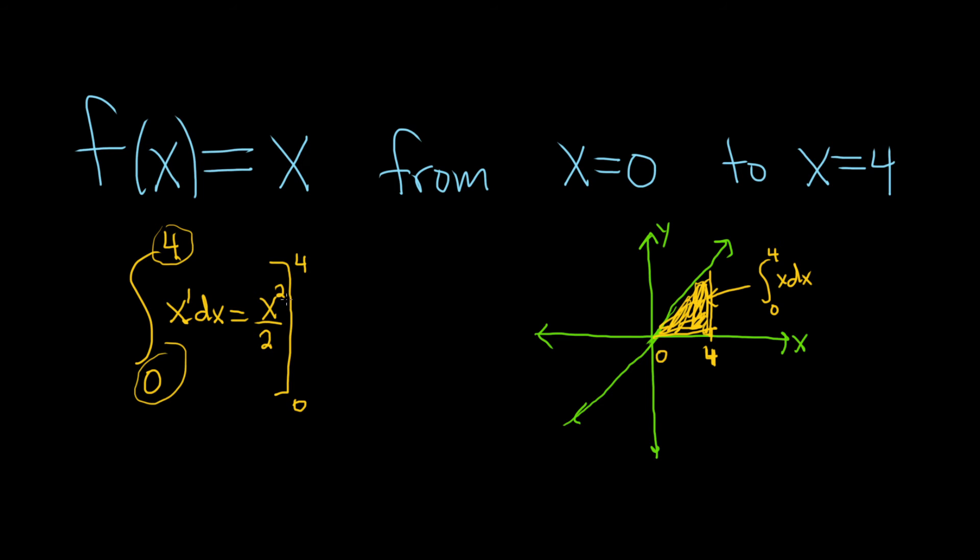So this notation means you plug in the 4 first. So it'll be 4 squared over 2. Minus, and then you plug in 0. So 0 squared over 2. 4 squared is 16. So we get 16 over 2. And then we get 0 over 2. So we end up getting just 8. So the area should be 8.